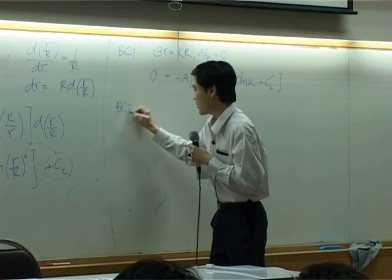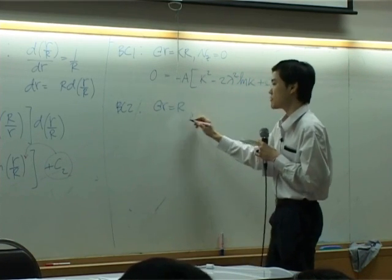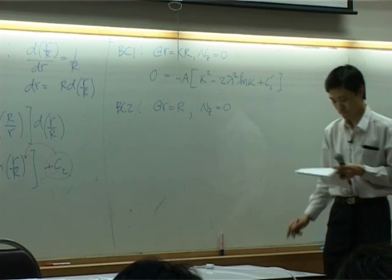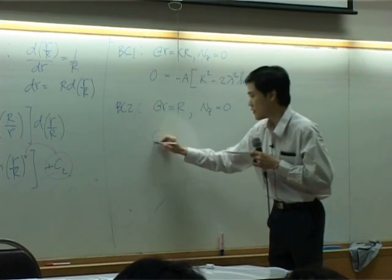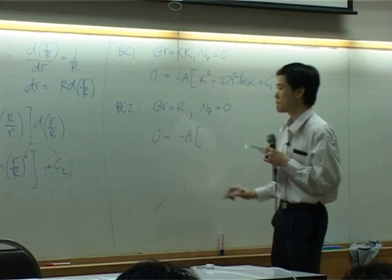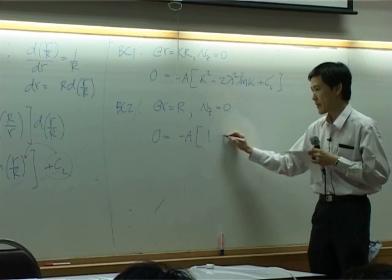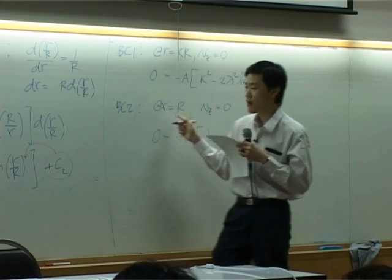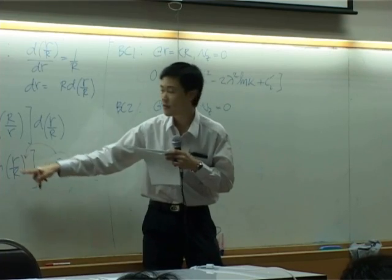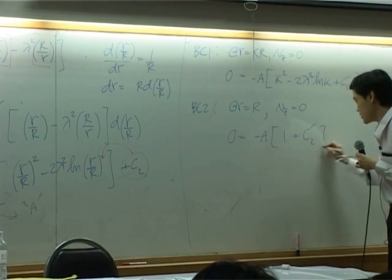So, the other boundary would be at r equal to capital R outside tube. Velocity is zero as well. So, here zero. Minus a. One, right? When r is equal to capital R, this term become one. Logarithm of one is zero. So, added by c2 prime.